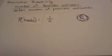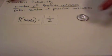Whereas on the bottom we have the number of possible outcomes. So there were two possibilities to toss the coin, either heads or tails. So probability of heads is one over two.